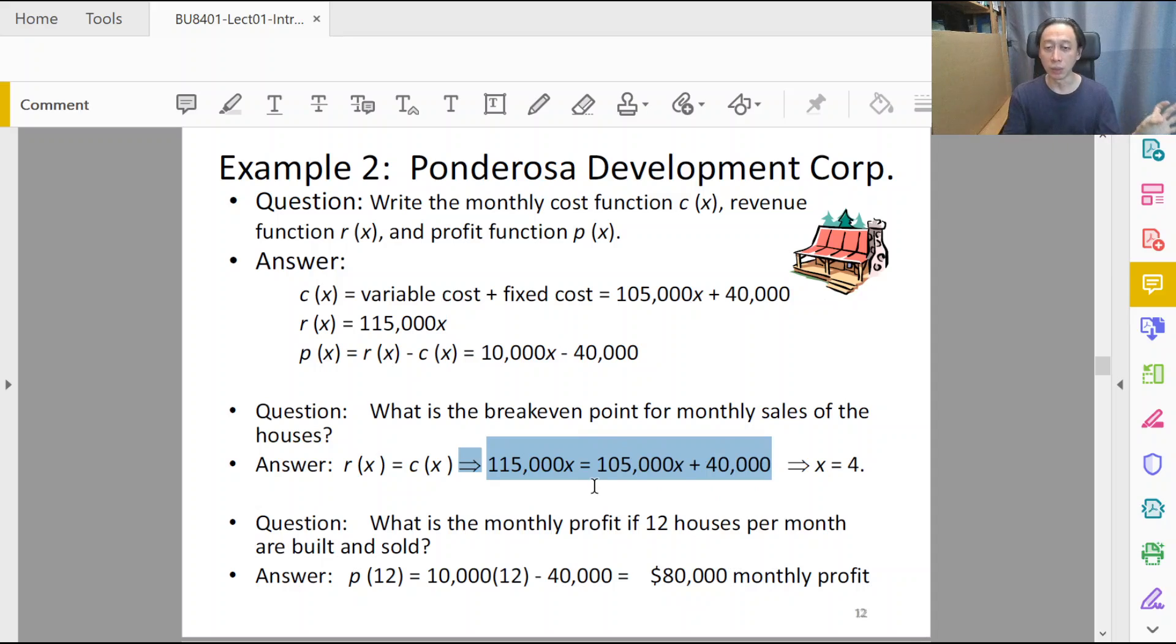So we simply set it to equal to zero. In other words, total revenue equals to total cost. And I believe this equation should be straightforward enough for almost anyone watching this video to solve. We get 10,000x = 40,000, therefore x equals to 4.